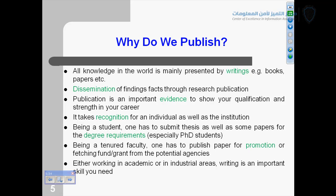For example, a presentation was delivered by a Microsoft director in China. He asked the attendees: what is the most important thing a researcher should possess? Some people said he should be a very good mathematician, a very good programmer, or have a strong background in the field. The director said the foremost thing is that the most important thing a researcher should possess is communication skills, either verbal or non-verbal. It's very, very important.